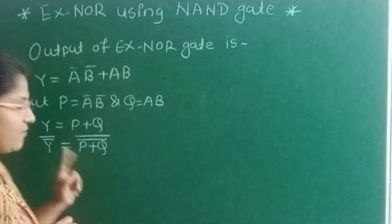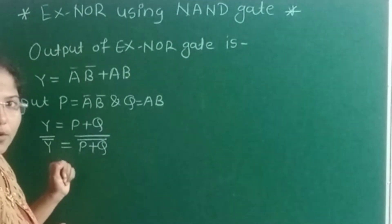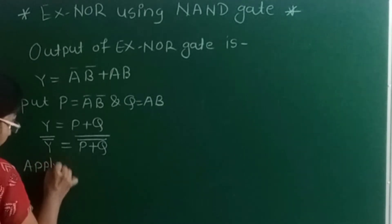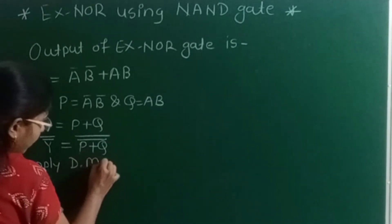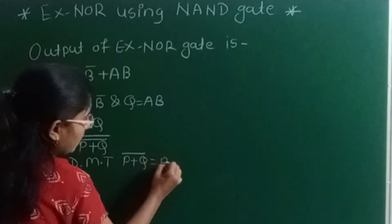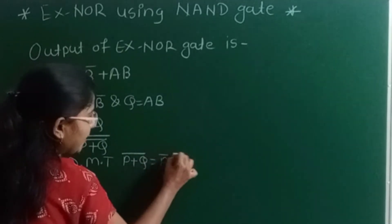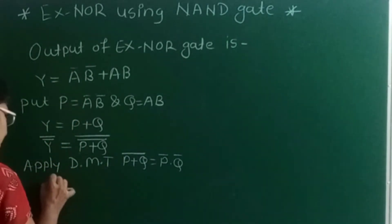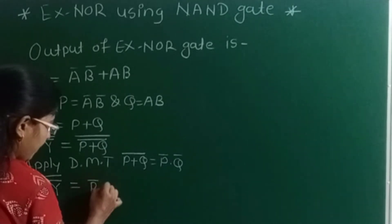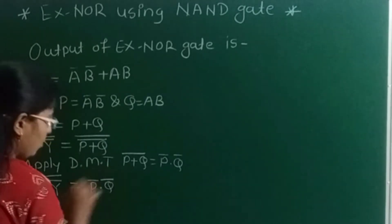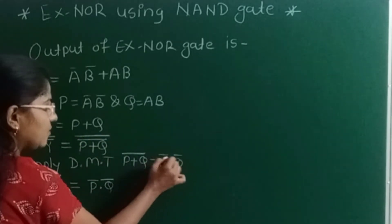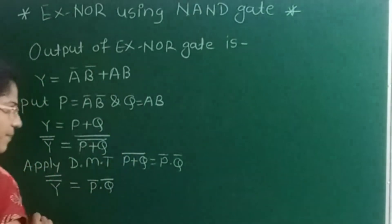The inversion law says Y double complement equals Y. Now apply De Morgan's theorem, where (P + Q)' = P' · Q'. So this expression becomes Y double complement = P' · Q', meaning (P + Q)' = P' · Q'.